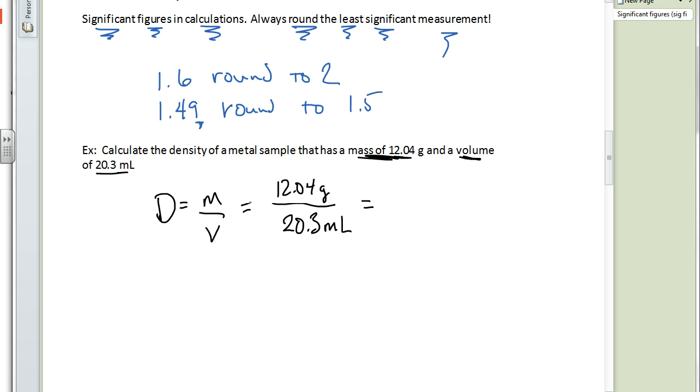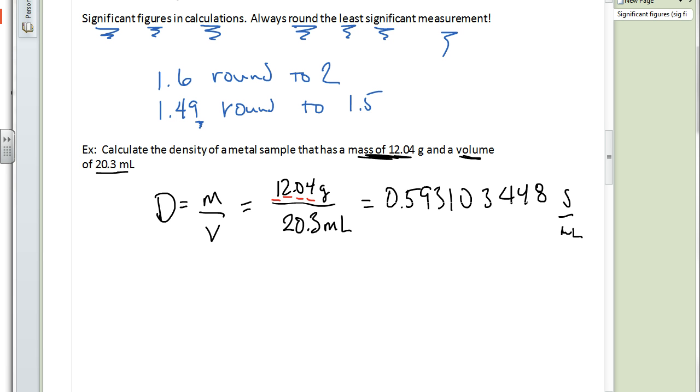I punched this into my calculator and I came up with 0.593103448 grams per milliliter. These values are way too precise for what we are measuring. Our mass measurement, that 12.04, is four significant figures, and our volume measurement is three significant figures. So we need to round our answer off to three sig figs. Rounding this answer off to three sig figs would be 0.593 grams per milliliter, and that would be our answer.